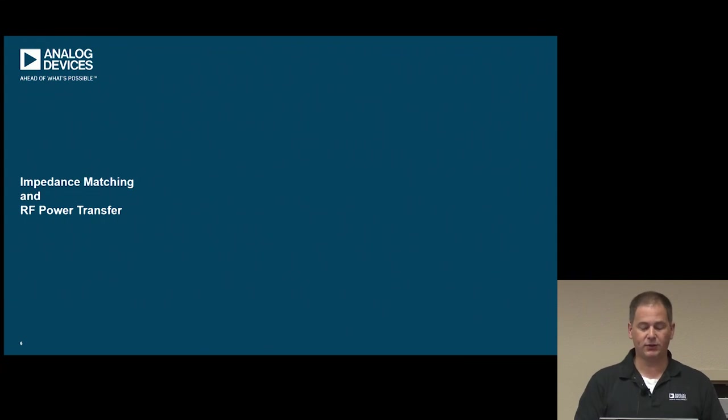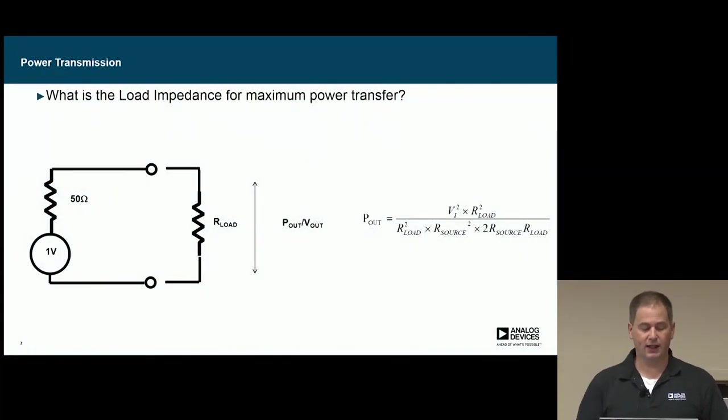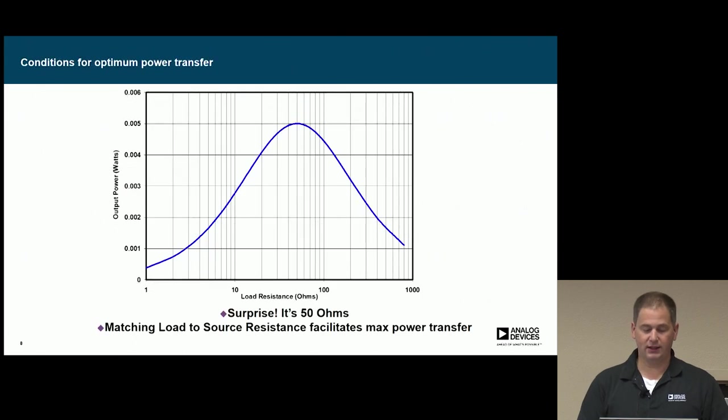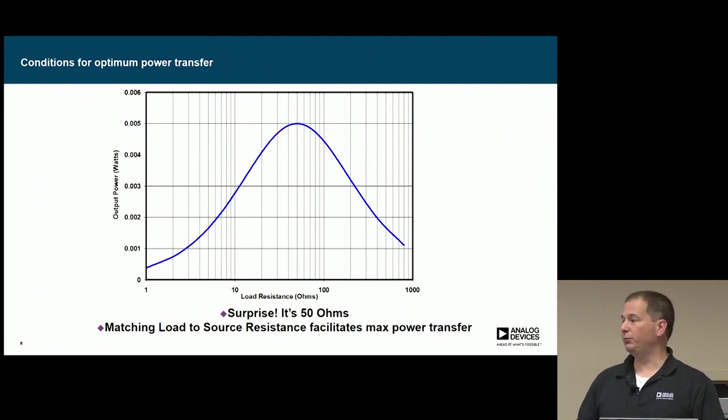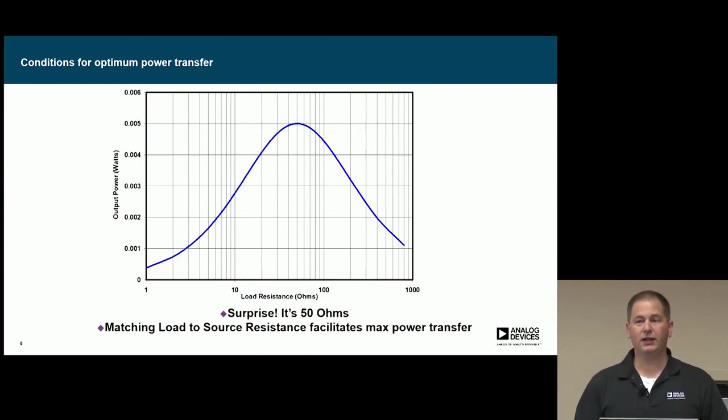So in terms of impedance matching and maximum power transfer, that's actually what we want to do. If we have a 50 ohm source over here, that's our DAC or ADC or our output of our mixer, what kind of load do we need to get so that we have the maximum power transfer? If we plot this out with various R's, the math tells us our maximum power transfer here is when we're exactly at 50 ohms. So when our input impedance matches our output impedance, we get maximum power transfer. That's why most antennas are 50 ohms. That's why most RF systems are 50 ohms.